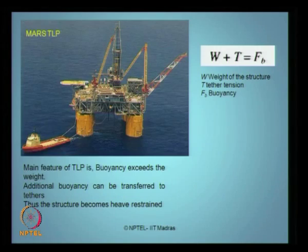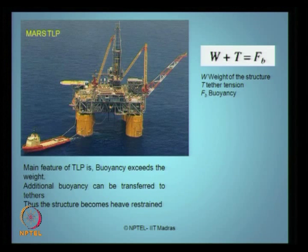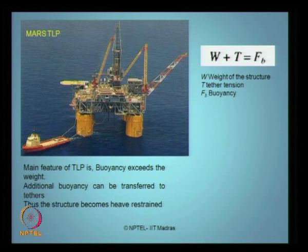Looking at this photograph of a four-column tension leg platform — the Mars TLP — the topside has three levels with a flare boom, crane derrick, drilling derrick, drilling floor, living quarters, power units, and helipad. If this is my elevation with the wave direction, the platform has freedom to move along x-axis, along y-axis, and to rotate about z-axis — it is free and floating. Whereas the platform cannot rotate about the x-axis (no roll), no pitch, and no heave — these are very rigid degrees of freedom.